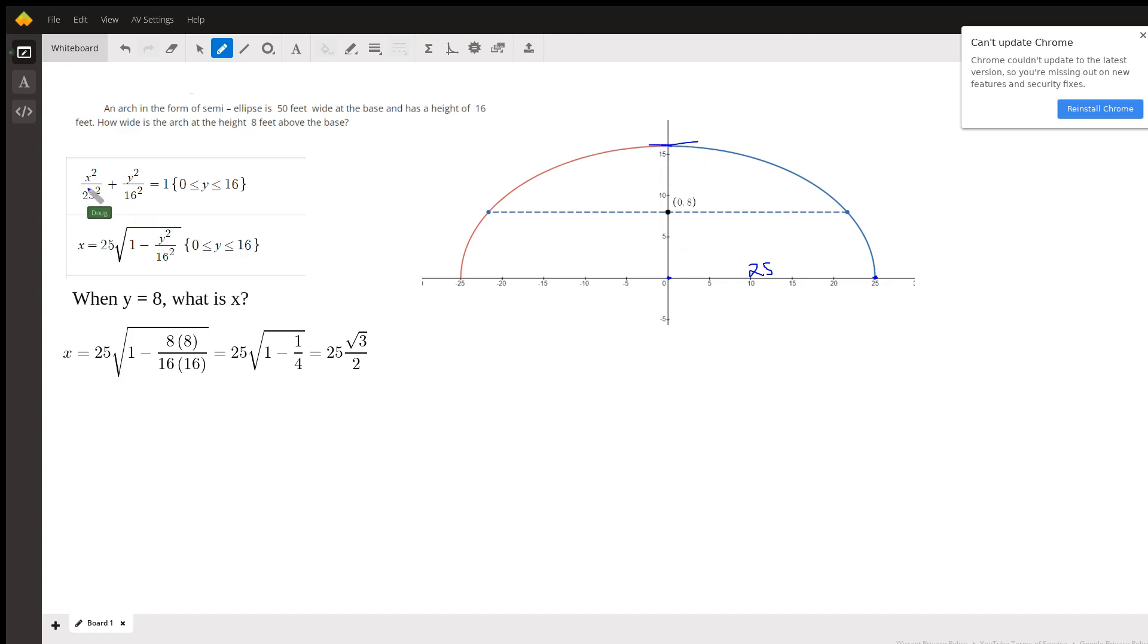So x squared over a squared, we call this distance b, plus y squared over b squared equals 1. I've restricted the y value to be between 0 and 16. That's why we have the semi-ellipse.